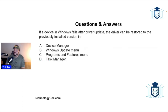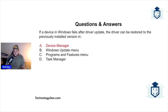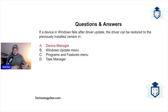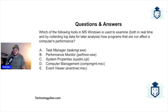If a device in Windows fails after a driver update, the driver can be restored to the previously installed version in what — Device Manager, Windows Update, Programs and Features, or Task Manager? You would go into Device Manager — that's where you go to install drivers or roll them back to a previous version. A driver is basically a piece of software that acts as a middleman allowing your operating system to communicate with a peripheral like a printer.